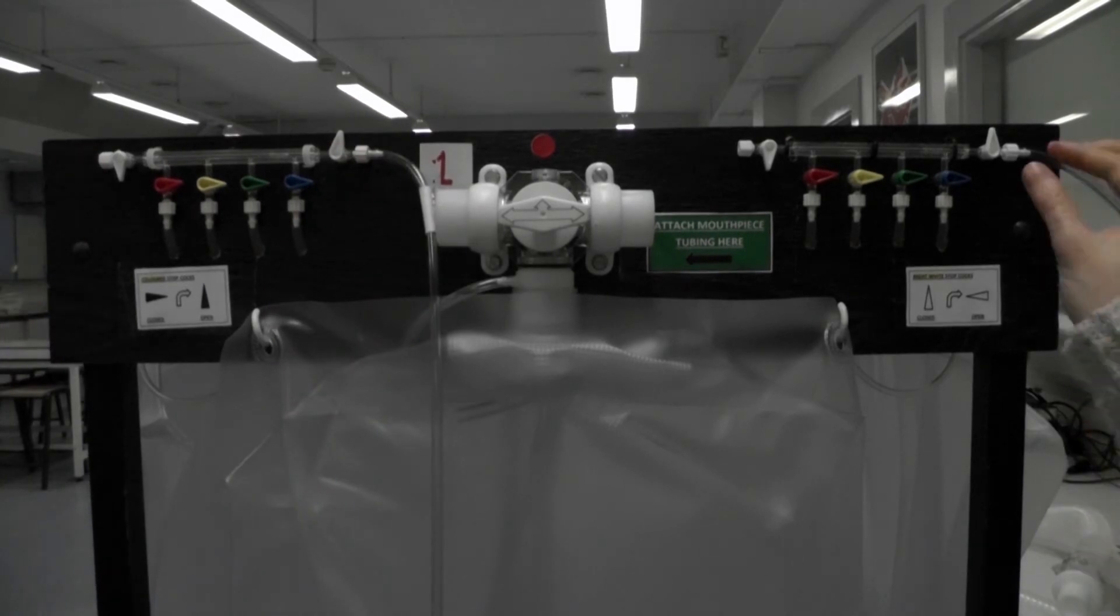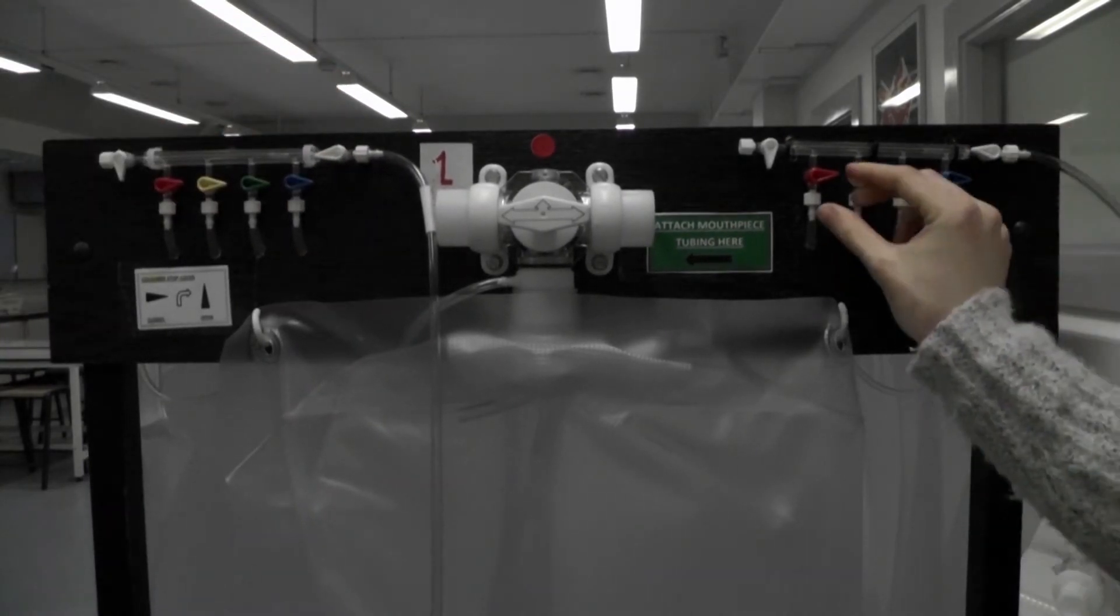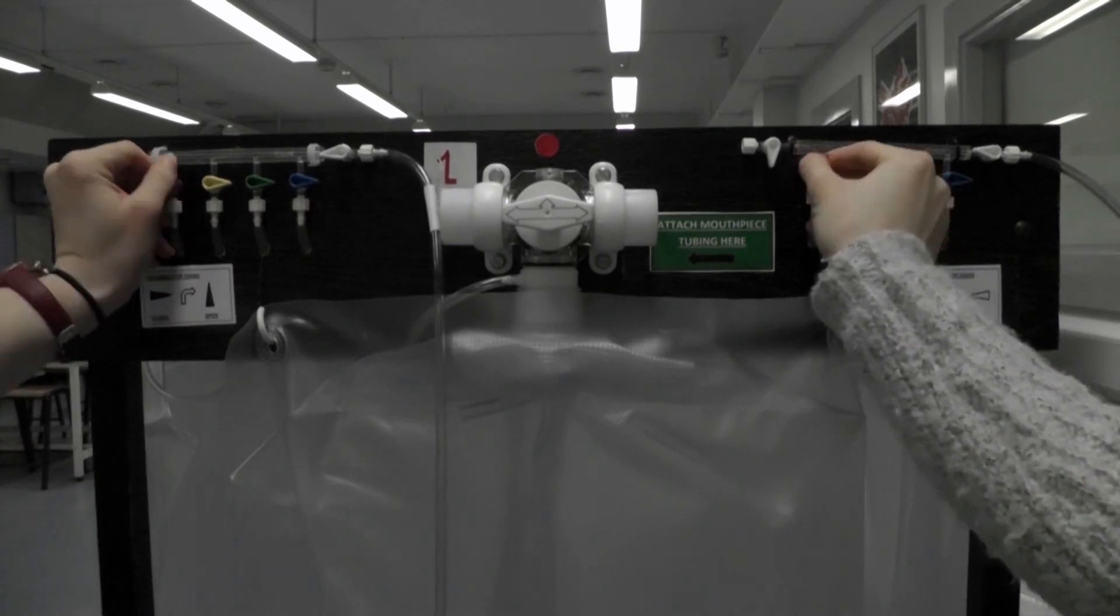Then to open the valves, turn the white ones to the left and the red ones up. The colors of the valves correspond to the color of the number on the Douglas bag.